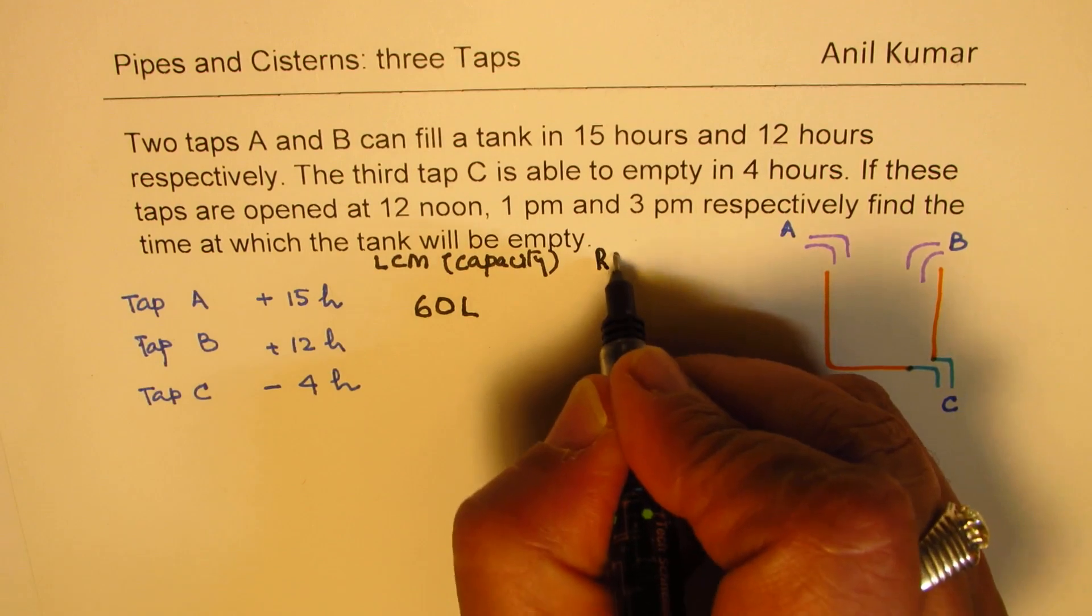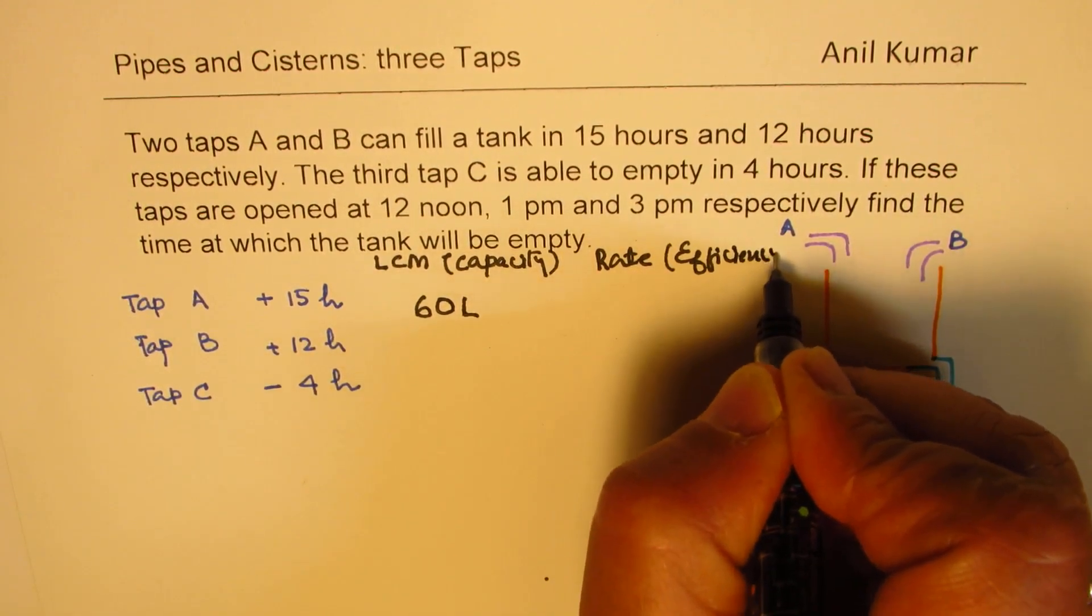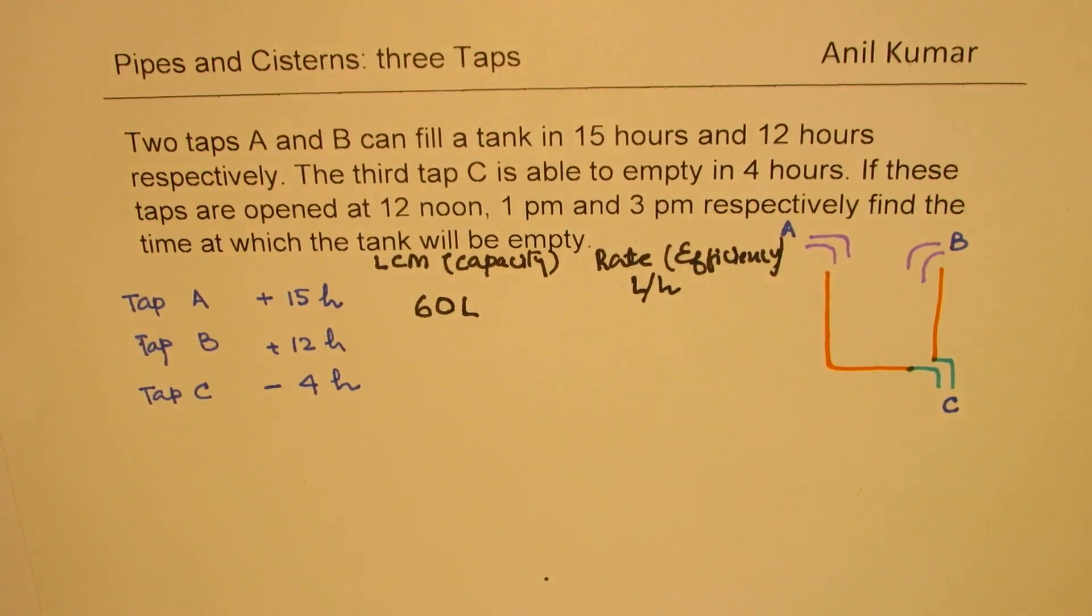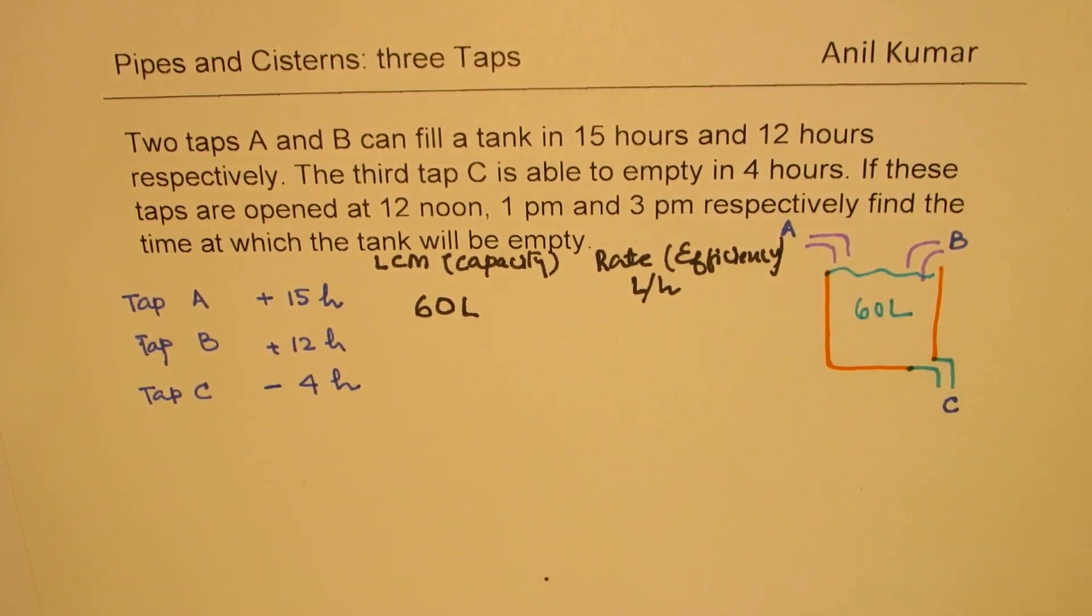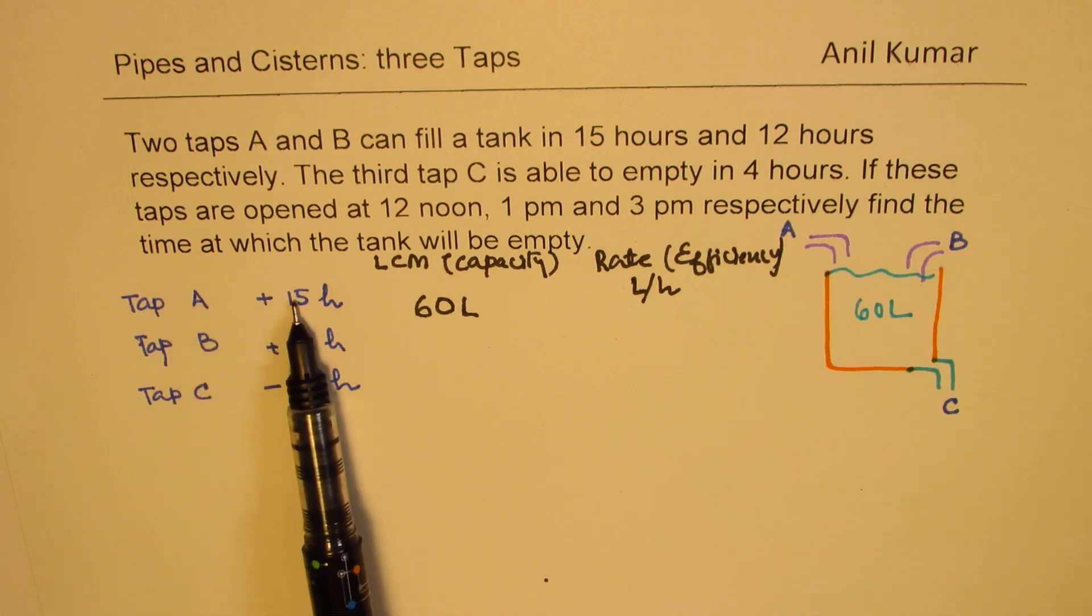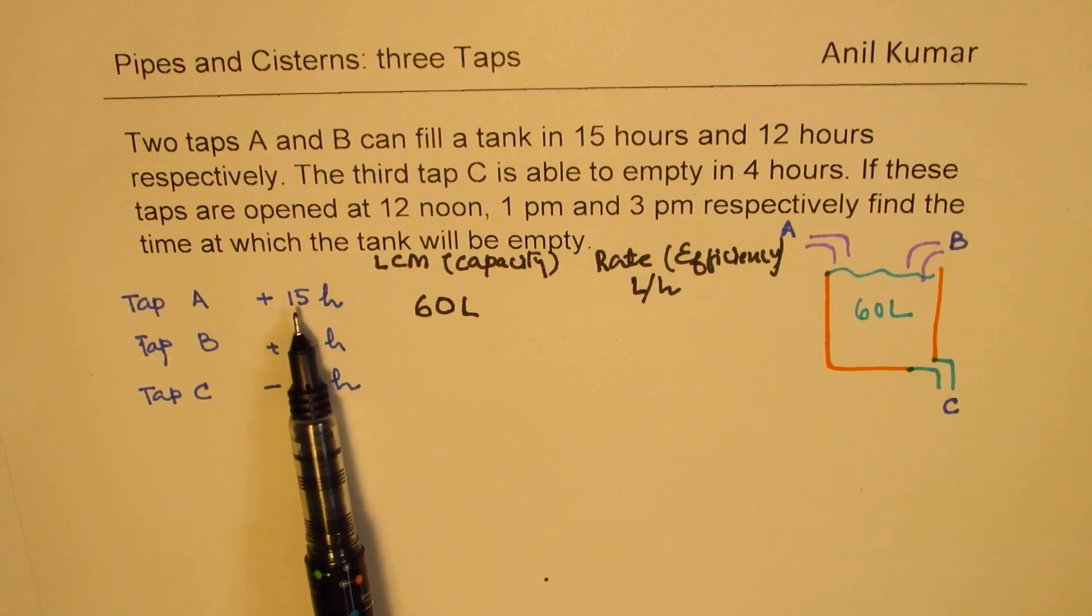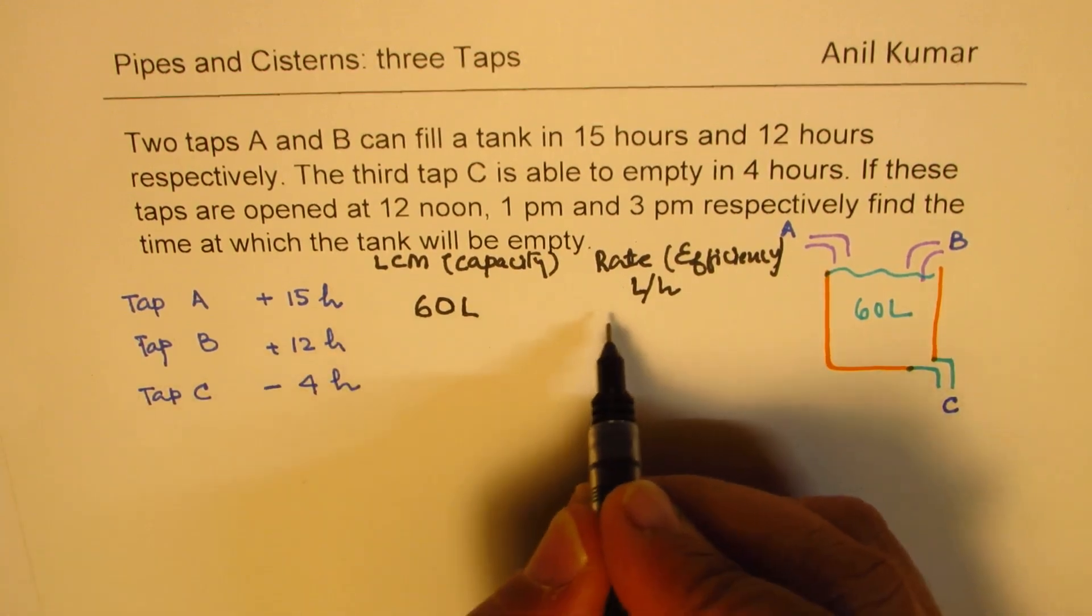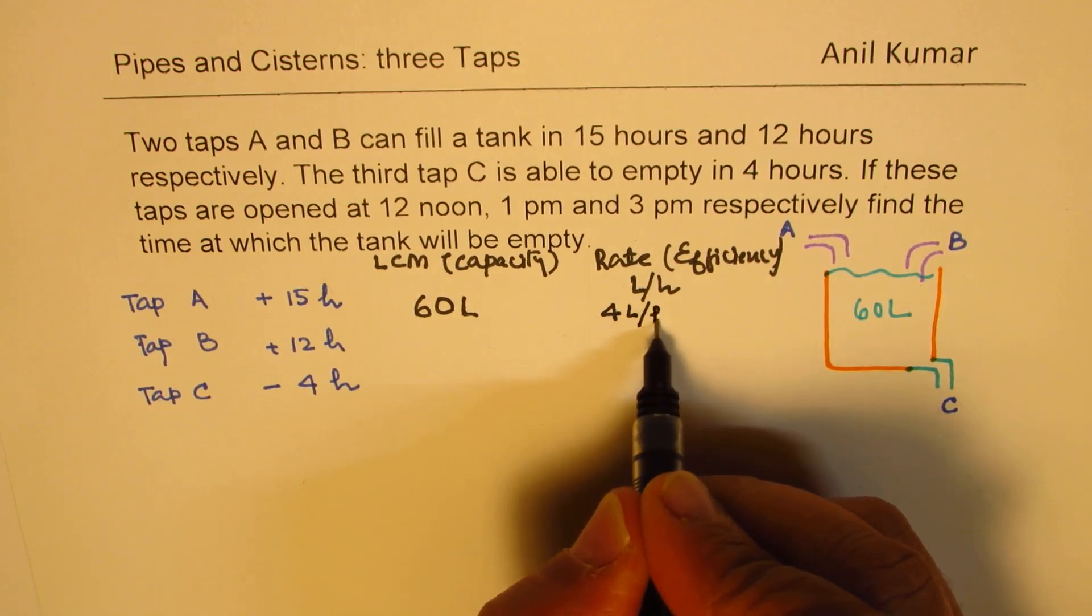Now let's find the rate. We also say rate as efficiency. It is basically liters per, in our case, hours. So if the tank is 60 liters when it is full, in that case, tap A takes 15 hours. So that really means that in one hour, it can fill 4 liters. So it is 4 liters per hour. That is the rate.